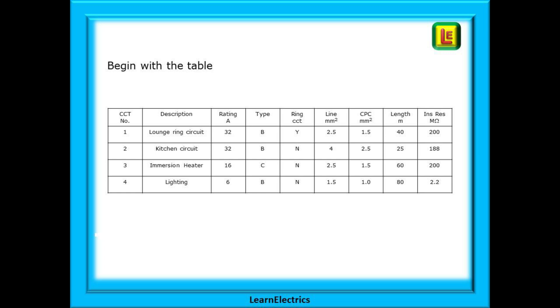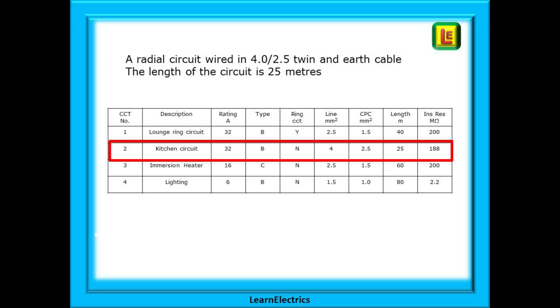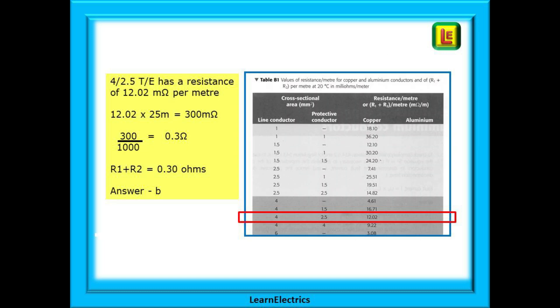Begin with the table showing the test results. Circuit 2 is a radial circuit wired in 4mm twin than earth with a 2.5mm CPC or earth. The circuit length is 25 meters. Now we need to consult table B1 in guidance note 3. We observe that 4mm 2.5mm cable has a resistance of 12.02 milliohms per meter. Multiply this by the circuit length of 25 meters and we have 300 milliohms. To convert milliohms into ohms divide by 1000. 300 divided by 1000 gives us 0.3 ohms. And that is the answer, 0.3 ohms.